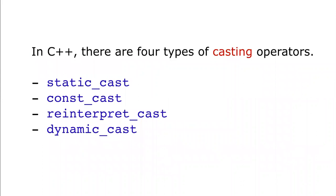In C++ we have four types of casting operators: first is static cast operator, const cast operator, reinterpret cast operator, and dynamic cast operator. We will cover this topic in another video. First we will see the output of code for our implicit and explicit casting.